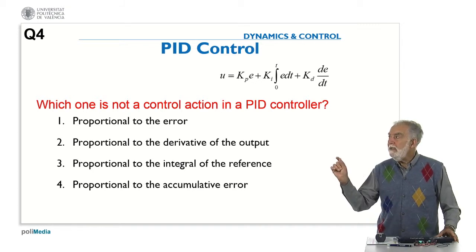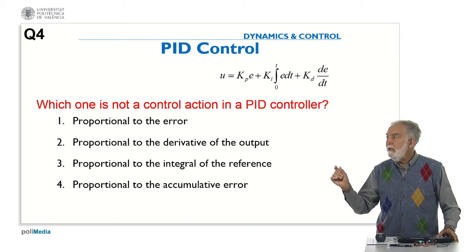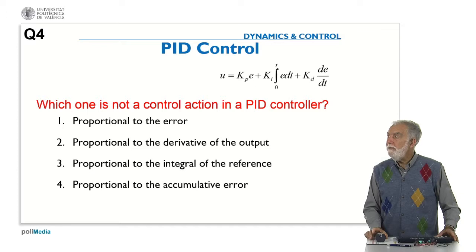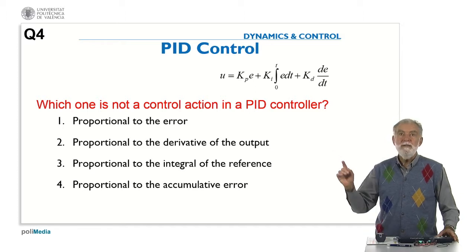We can see here that there are three terms, and each one of them is related to one of these activities. Let's consider the proposals. Is proportional to the error a control action? Yes, it's the first term.